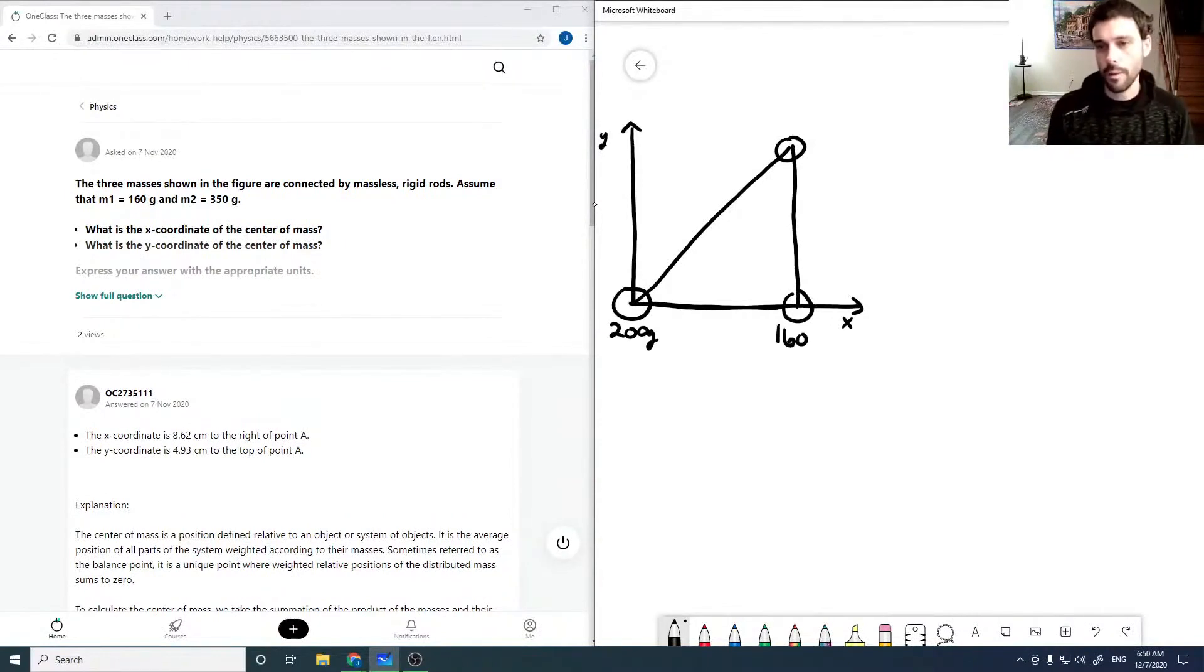160 gram mass here, a 350 gram mass here, and we're given that this is 12 centimeters and this is 10 centimeters. It asks for the x coordinate of the center of mass and the y coordinate of the center of mass.